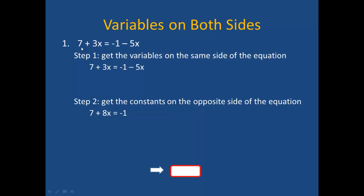In our first example, we have 7 plus 3x equals negative 1 minus 5x. Step 1 is to get the variables on the same side of the equation. In order to do this, I am going to add 5x to both sides and simplify, which will give me 7 plus 8x equals negative 1. I now have a variable on only one side of the equation.